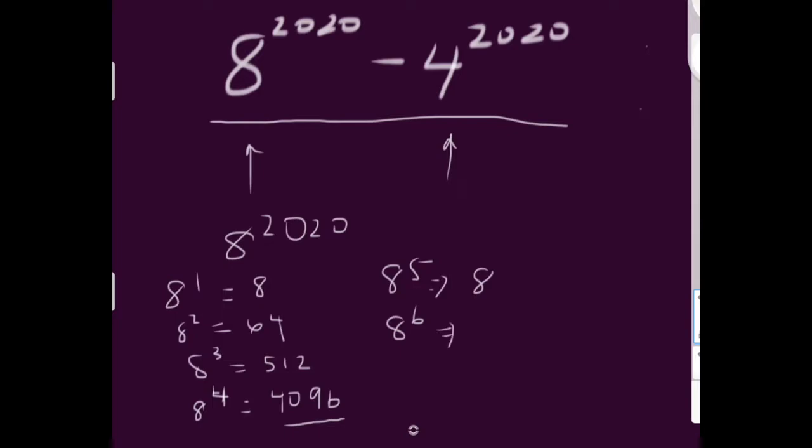8 to the sixth, the last digit will end in 4 because 8 times 8 is 64. That 8 is what we're looking at. Then we'll keep going. 8 to the seventh. So now we're looking at this 4 and multiplying by 8. So we know that 8 to the seventh will end in 32, or not necessarily 32, but it'll end in 2. Then 8 to the eighth, that'll end in 6 because we're multiplying the 2 by an 8.